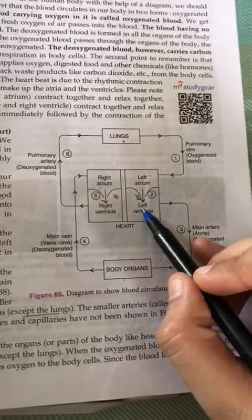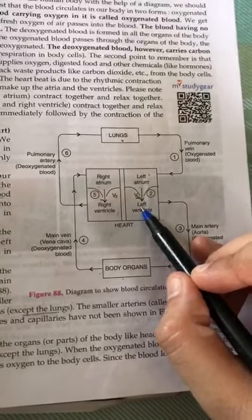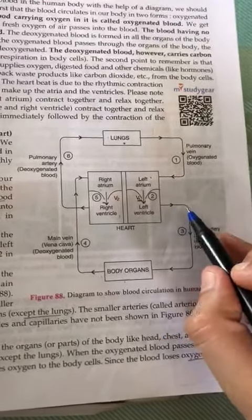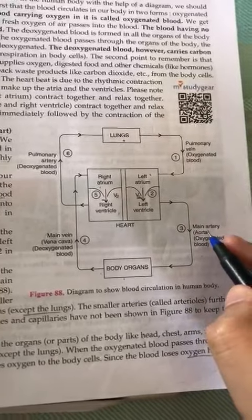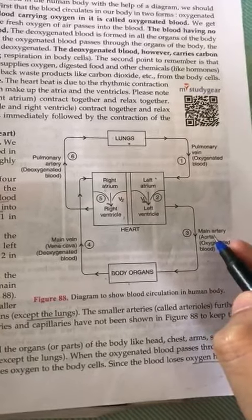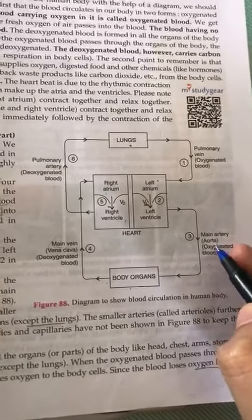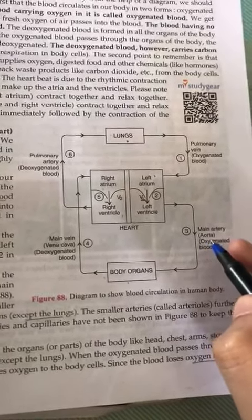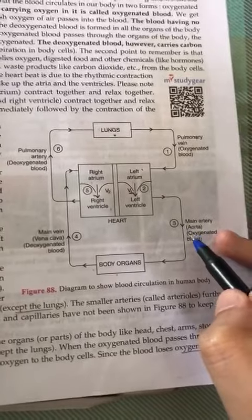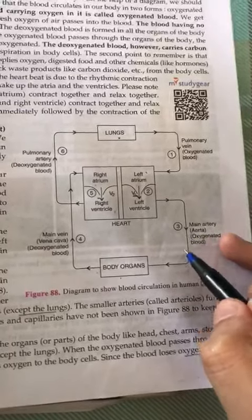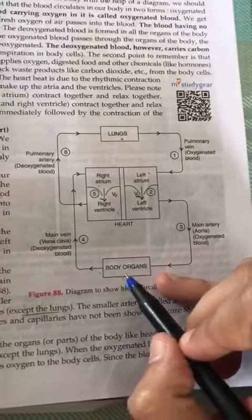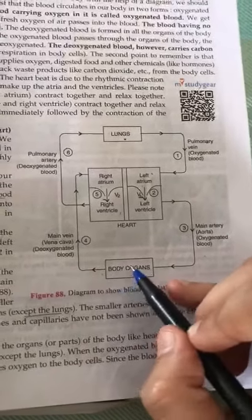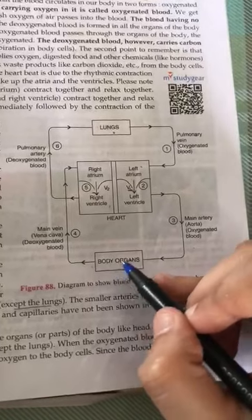From the left atrium, blood goes to the left ventricle, and then further the blood is carried by the main artery — the aorta — which carries the blood to the different organs.